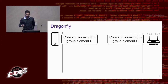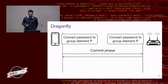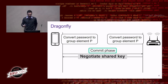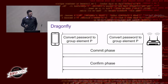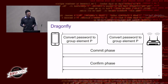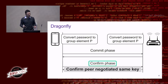Once both devices have converted the password into the group element, they execute the actual handshake, which consists of two main phases. The first is the commit phase, which essentially negotiates a shared key between client and access point. The second is the confirm phase, where both devices confirm they negotiated the same session key — which in turn means they used the same password. If the confirm phase succeeds, both parties know the other has the correct password.